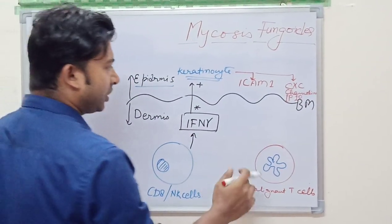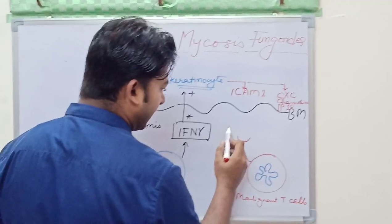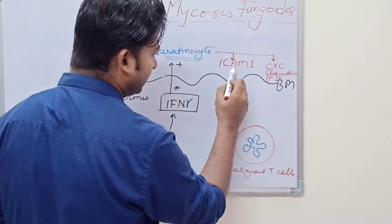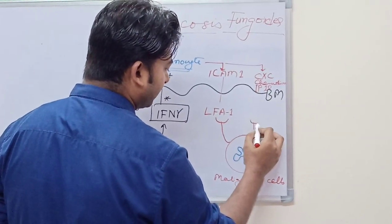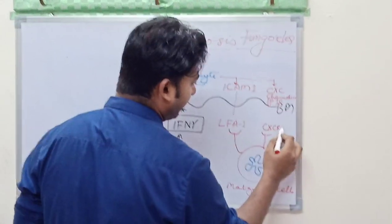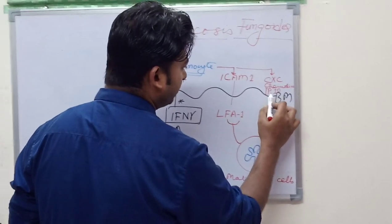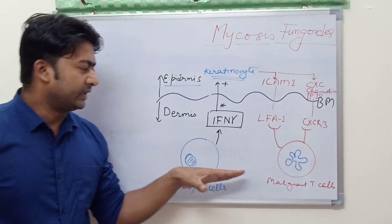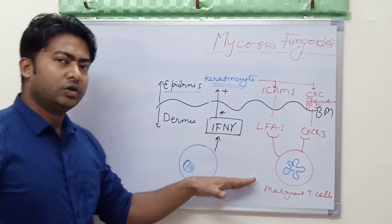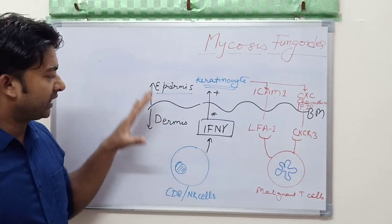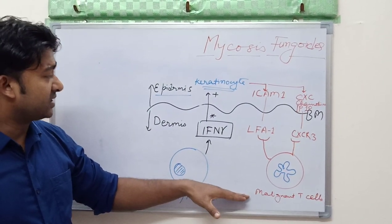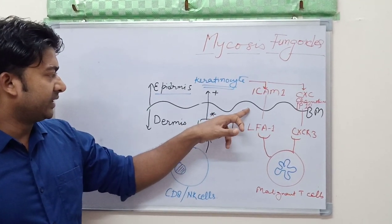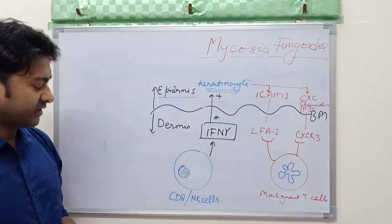The lymphocyte has got receptor and it has lymphocyte function associated protein 1 (LFA-1). This binds to ICAM-1. Also have receptor for the chemokine CXCR3 receptor which binds to the inducible protein 10. So this epidermotropism basically means the tendency of atypical lymphocytes to go into the epidermis.